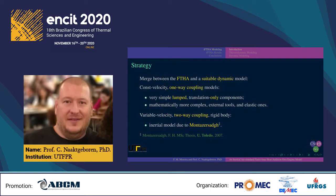The strategy is to make a model merge between the FTHA model and a suitable dynamic model. Available constant velocity dynamic models, which constitute one-way couplings with the thermodynamic model, either tend to be very simple with lumped translation-only components, or substantially more complex with external dependencies or elasticity. A model found to be quite fitting for coupling to the FTHA model was the variable velocity, hence two-way coupling, rigid body inertial model due to Montazer's et al.